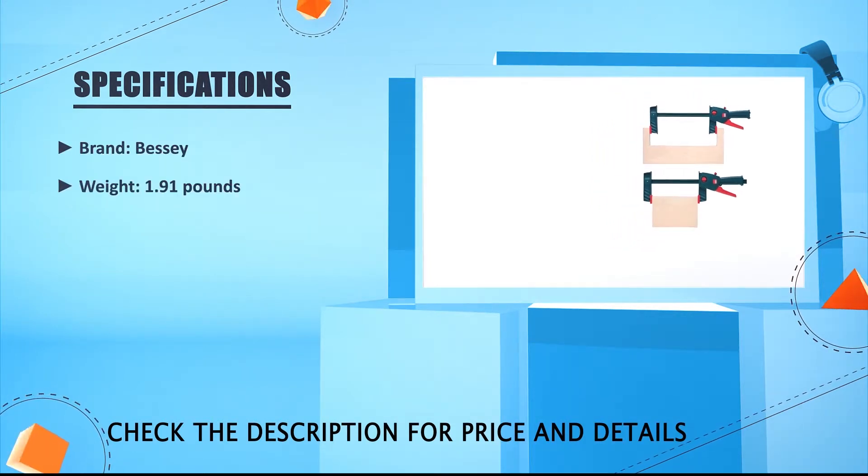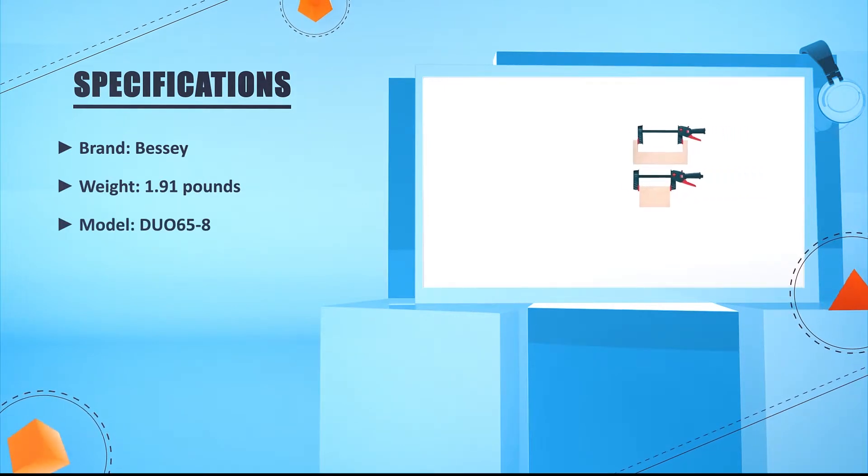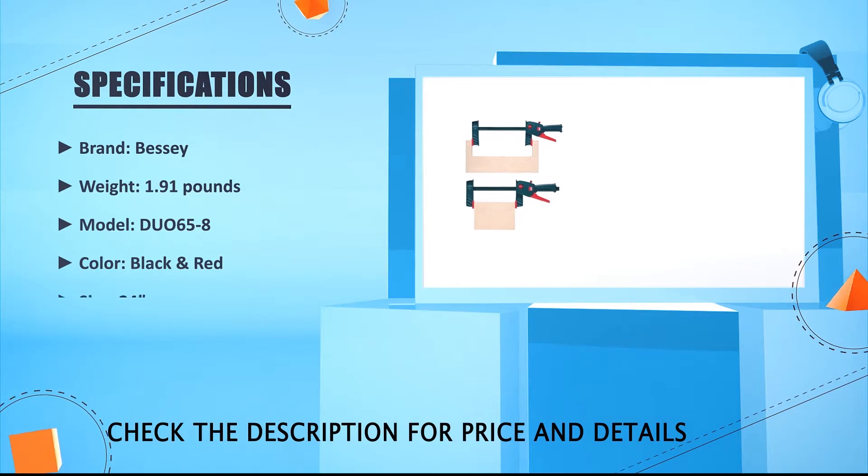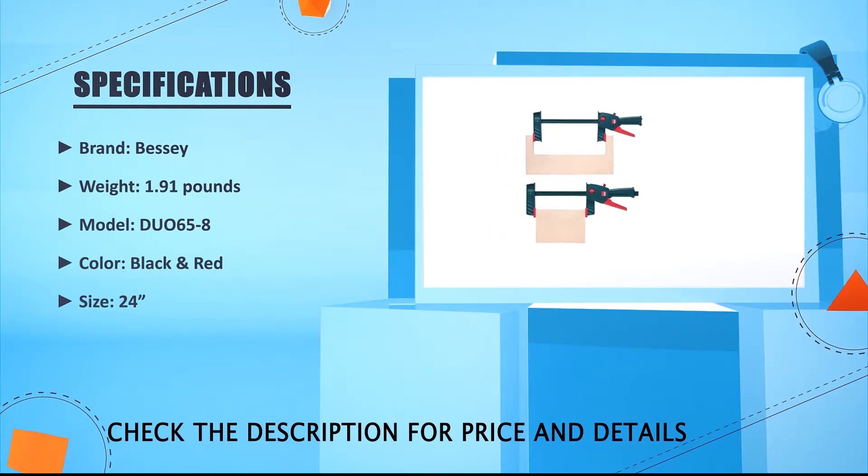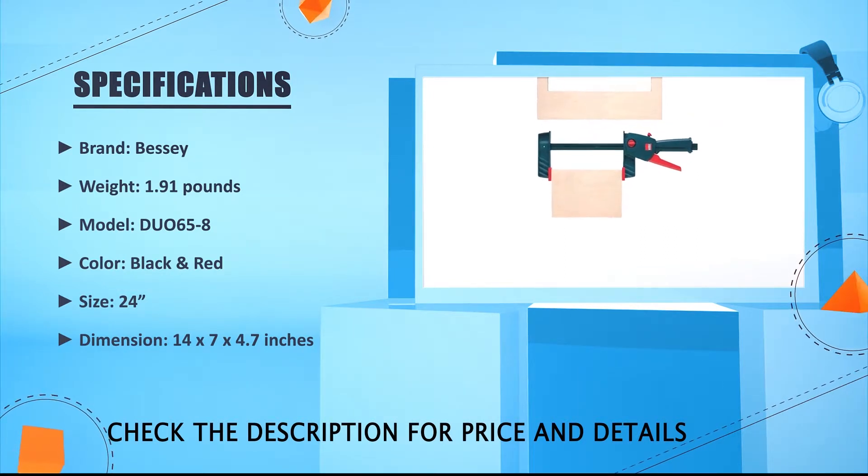Brand: Bessie. Weight: 1.91 pounds. Model: DUO-6 5/8. Color: black and red. Size: 24 inches. Dimension: 14 x 2.7 x 2.4.7 inches.